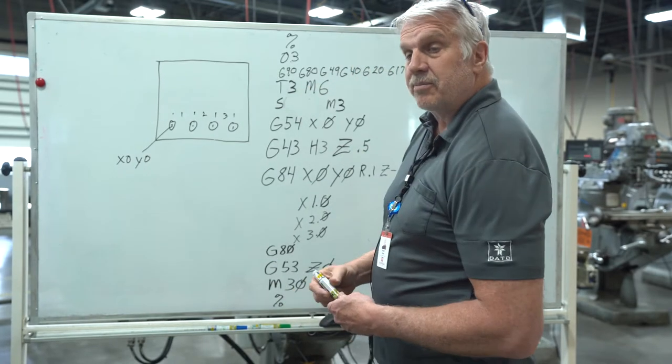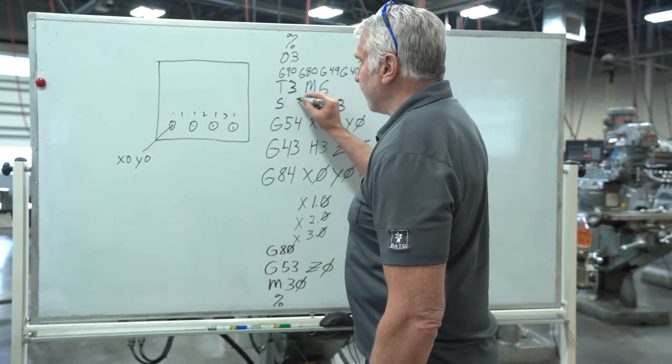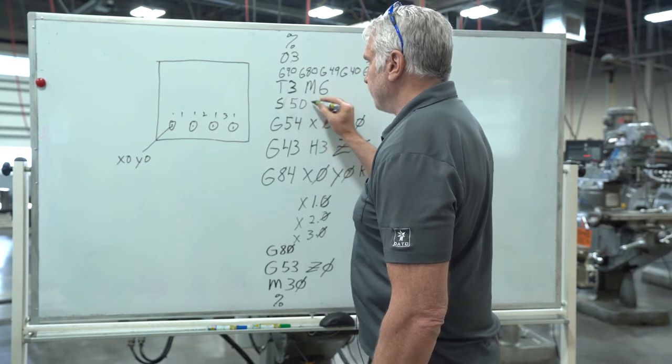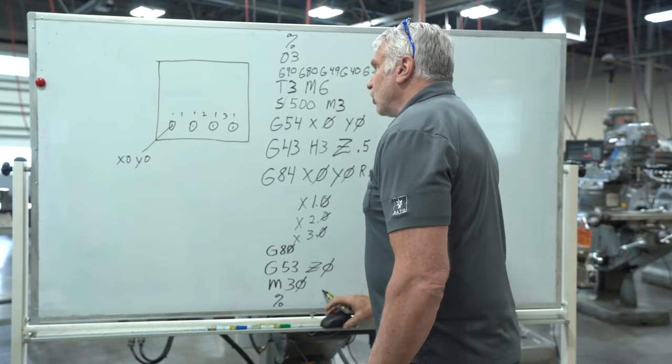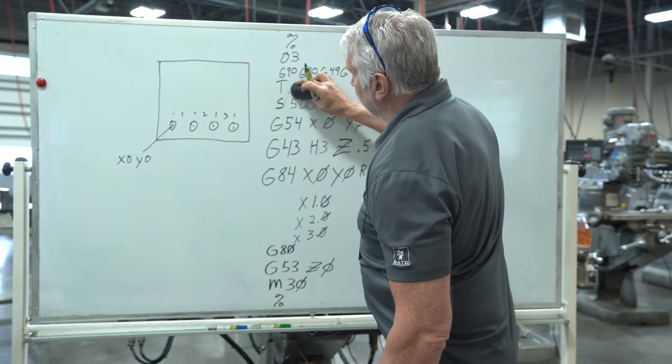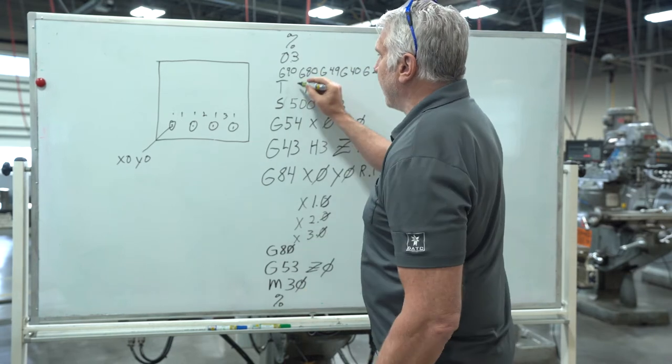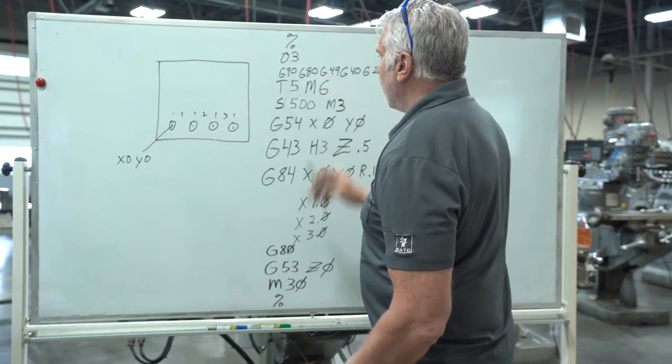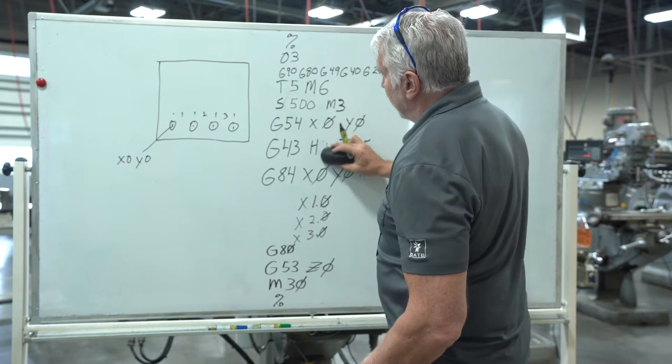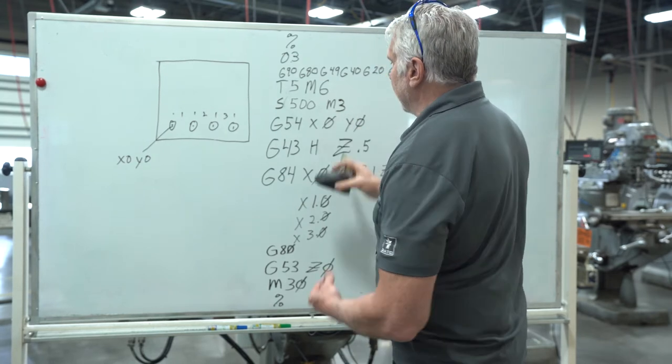So let's say in this particular case we're going to go S of 500 rpm. This is tool number five, so we're going to just erase that and make that tool number five. Since it's tool five, we want it to be height offset five.